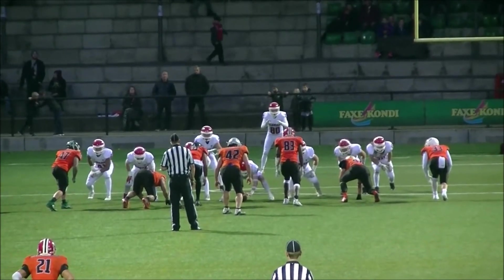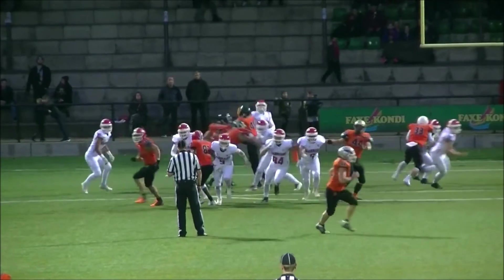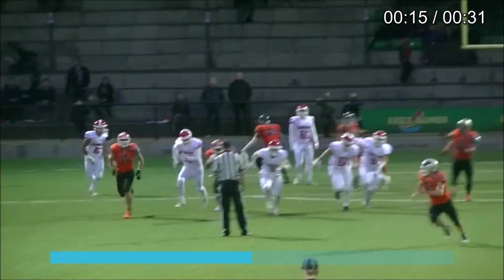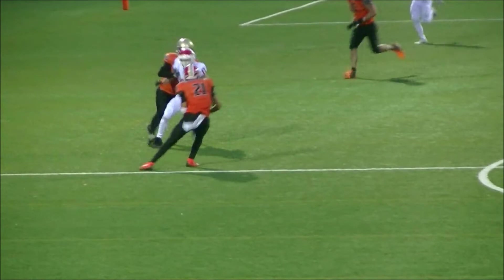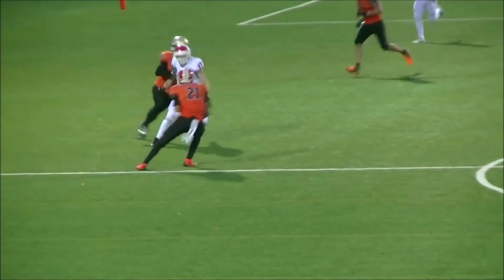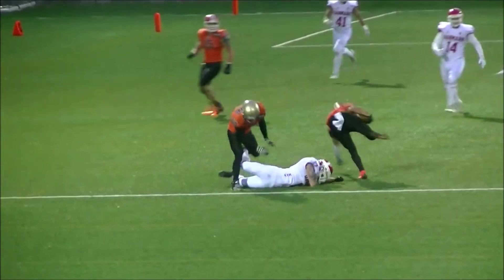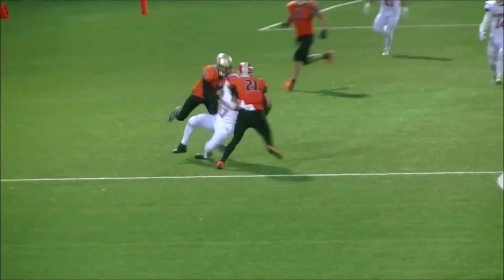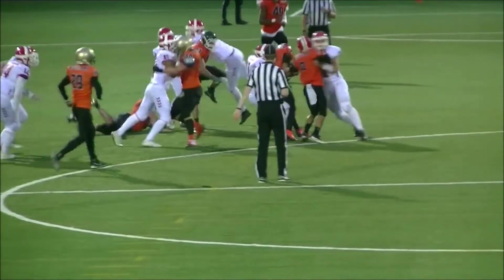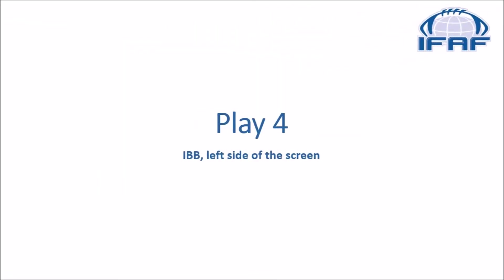On this play we're looking at the left side of the screen, and we'll see white number 17 coming in. This is a pretty good example of a block in the back and the Oreo cookie — three players in the middle with the middle player in a different color jersey, an easily recognizable image. It would be tough to argue that the brunt of the contact was from the side, and it certainly impedes white number 17's ability to make the tackle. Good call for block in the back.